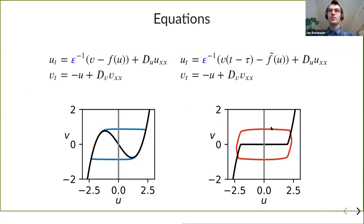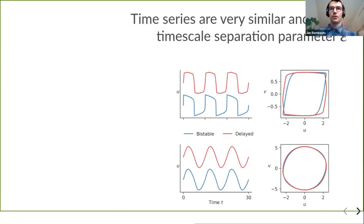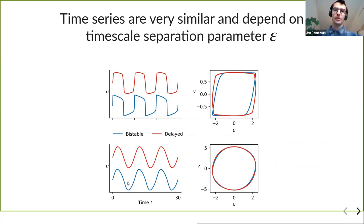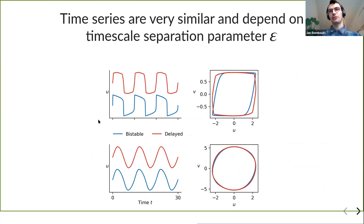I designed the delayed system to be as close as possible to the bistable system — mathematically different (one is a delay equation, the other an ODE), but compared to try to see the parallels. Depending on the epsilon parameter, the shape of the oscillations is very different: for very small epsilon, large timescale separation gives relaxation-type oscillations with sharp jumps, similar for both bistable and delayed oscillators. For larger epsilon, both systems are more harmonic, with waveforms more like a sine wave and nearly circular phase-plane trajectories. This epsilon parameter will be the main parameter I study.